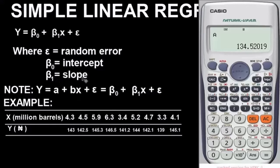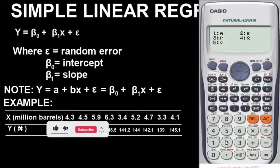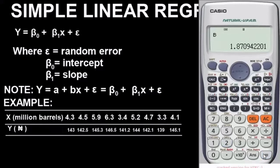To get β₁ which is the slope, or b, you remove this, go back to shift, stat, regression, press option 2, and then press equals. So this is the value for our slope β₁ or b: 1.87094220. This is our slope.